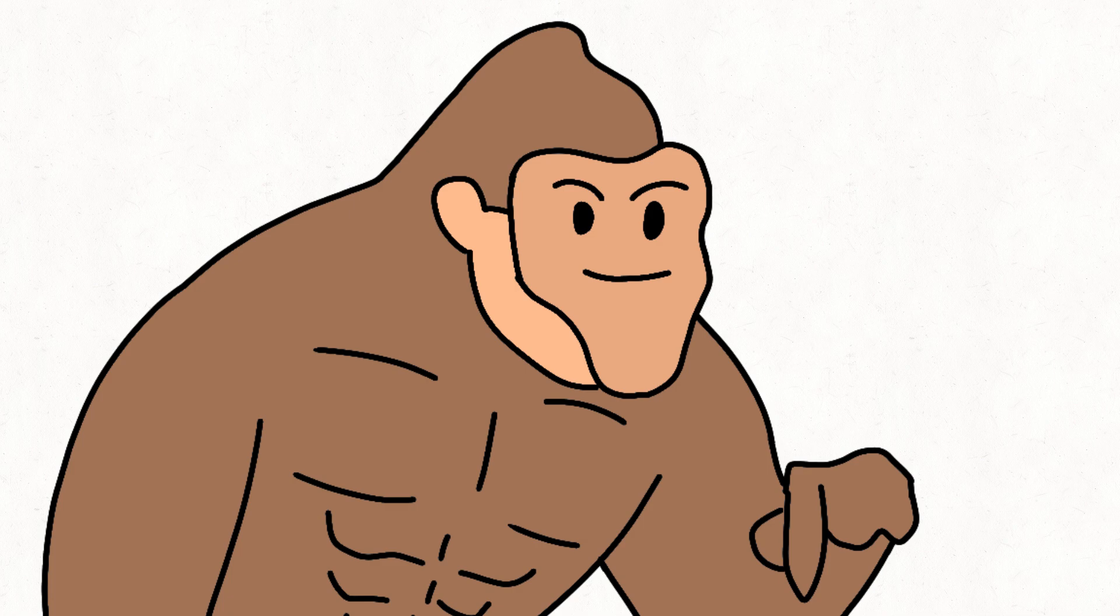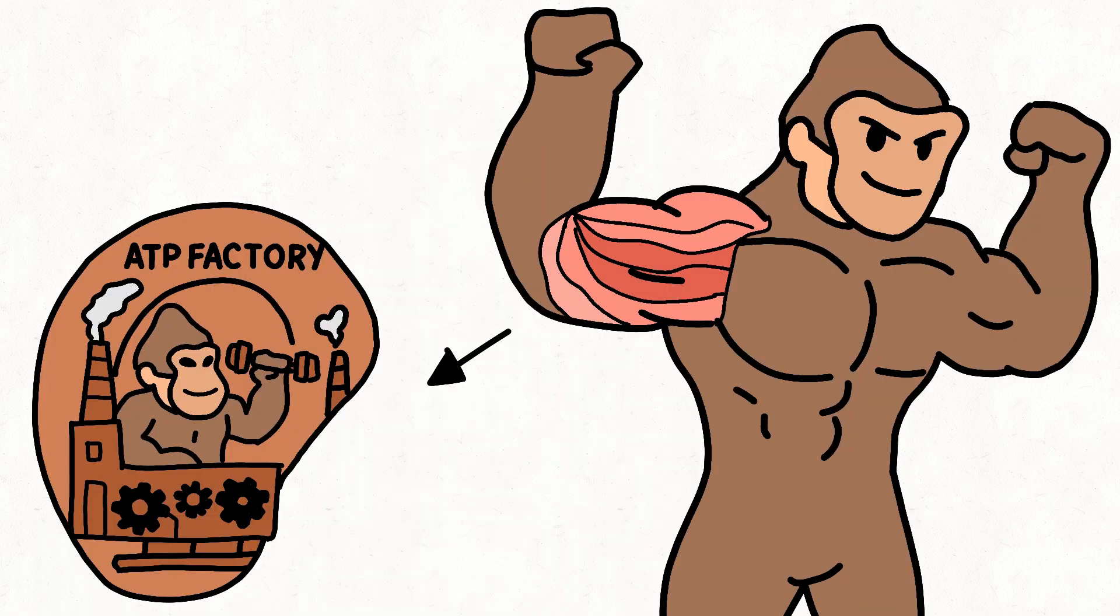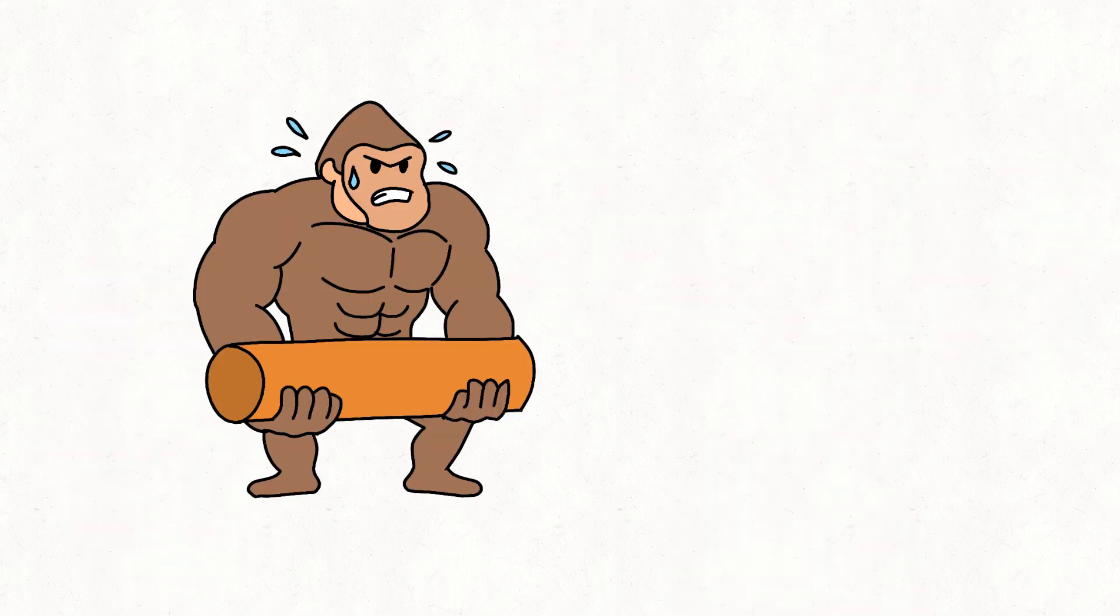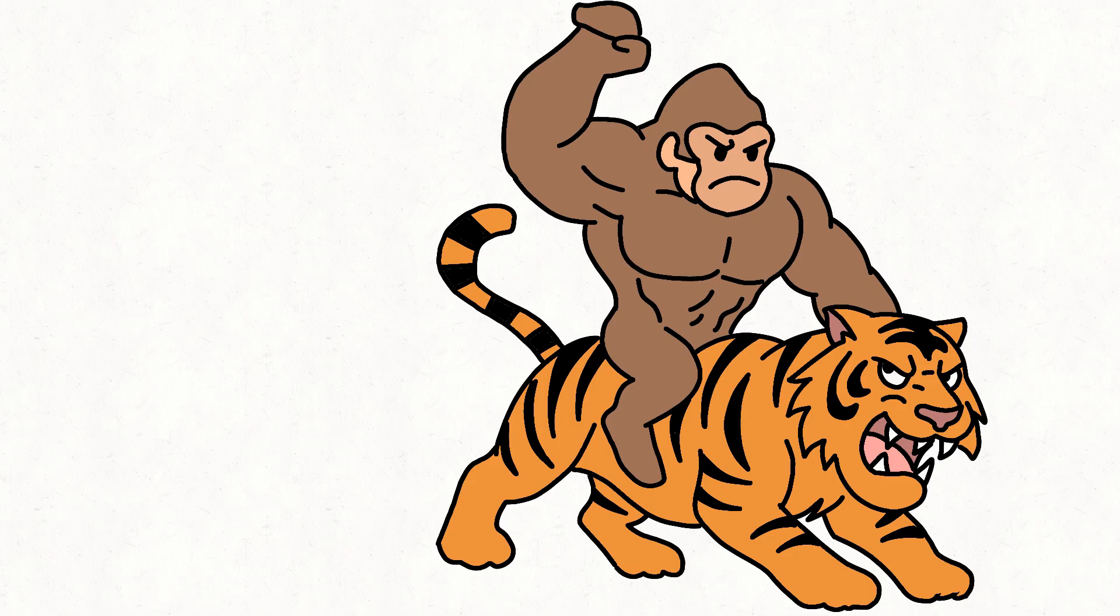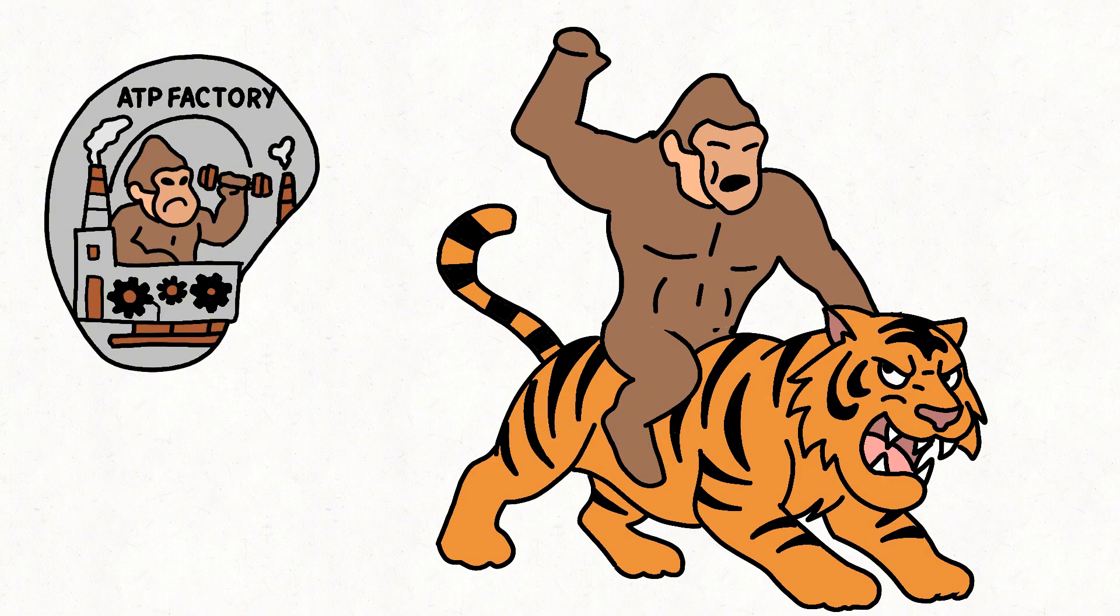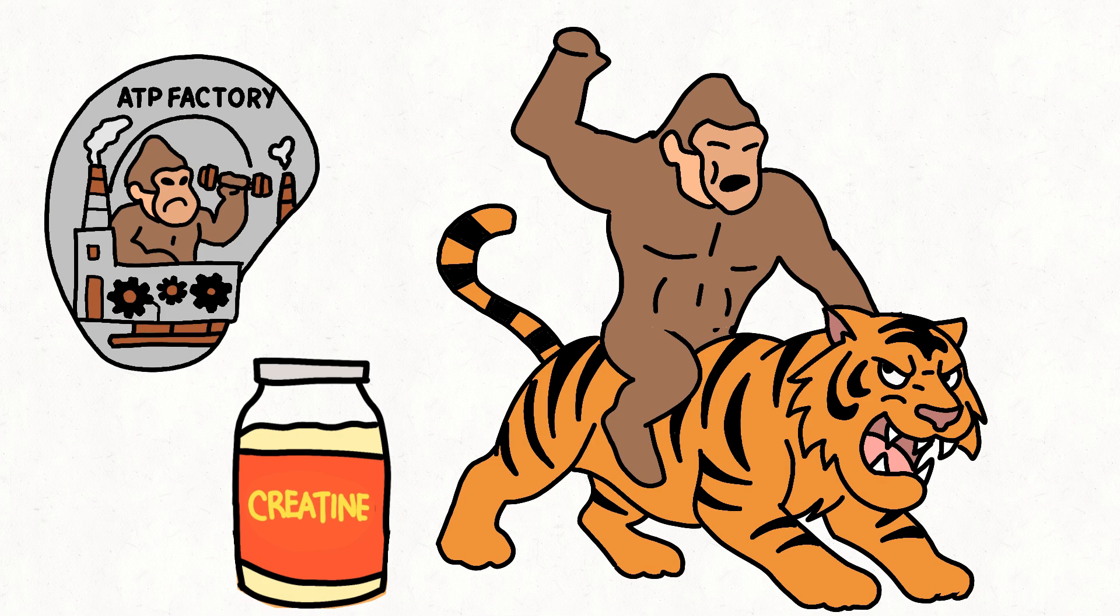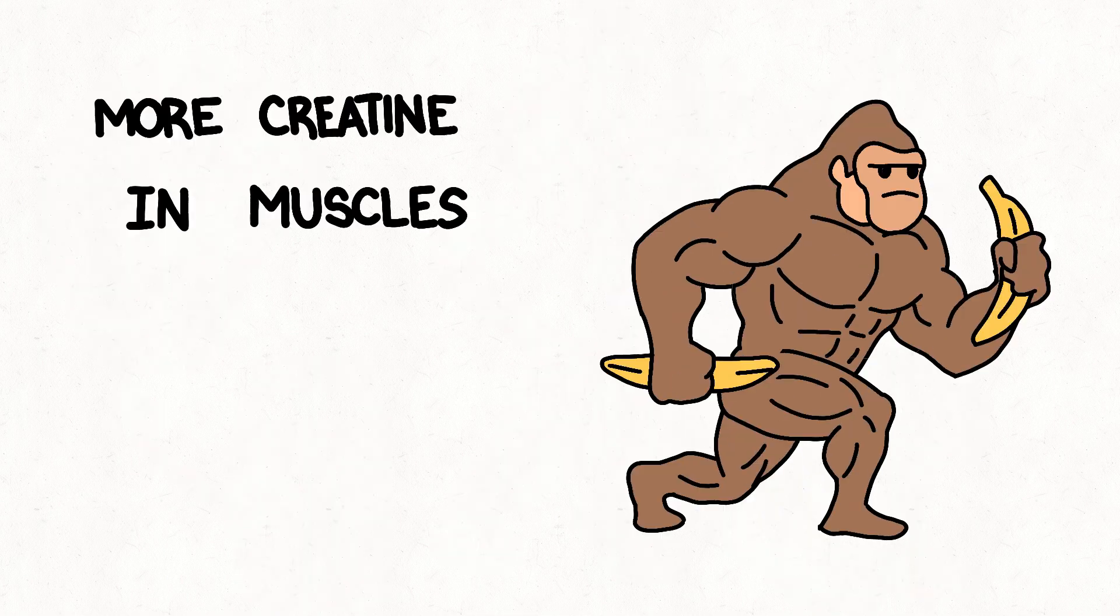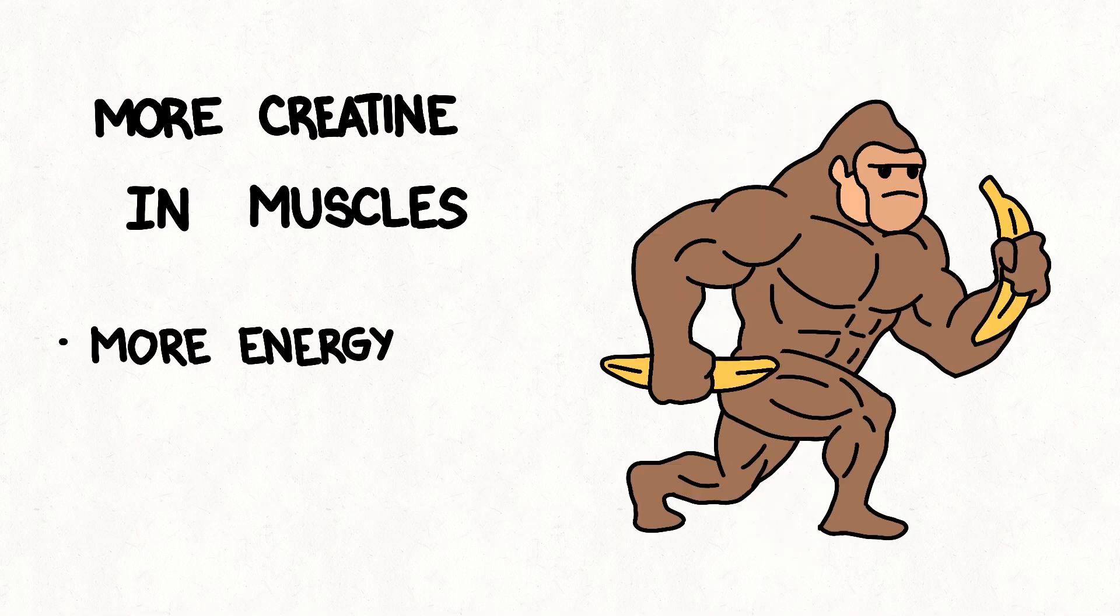Monkey explains simply. Inside every muscle live tiny energy factories - ATP, short for Ape Training Power. Every time monkey lifts, runs, or fights a tiger, the body uses ATP. But after a few seconds, ATP runs out. Monkey feels weak. That's where creatine phosphate comes in. It refills ATP fast. More creatine in muscles equals more energy equals more reps equals more growth.